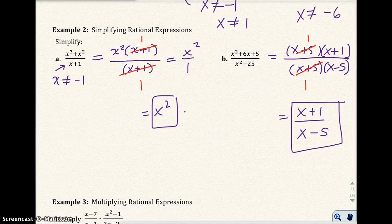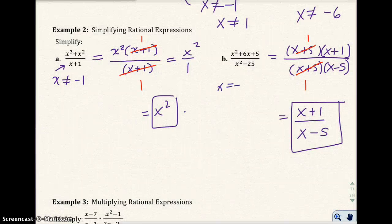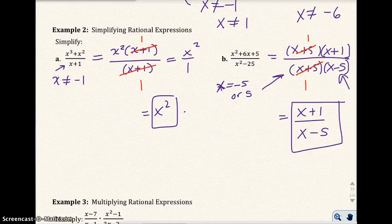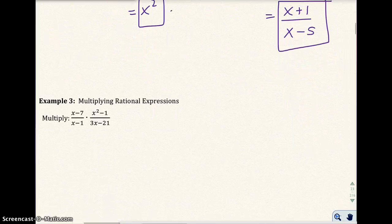And in this problem, x cannot be 5, negative 5. It cannot be negative 5 or 5. And how do I know that? I look at the denominator here.